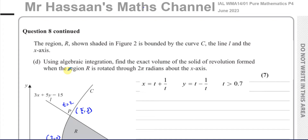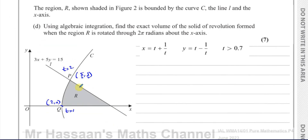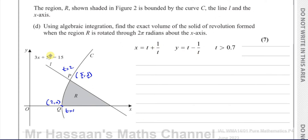We're told about region R, shown shaded in Figure 2. It's bounded by curve C — whose equation we were given in the earlier parts — the line L, whose equation we already showed, and the x-axis. This region is enclosed by these three things: the line, the curve, and the x-axis. Using algebraic integration, find the exact volume of the solid of revolution formed when region R is rotated 2π radians about the x-axis.